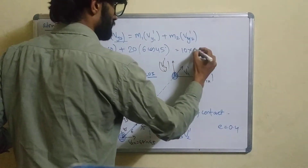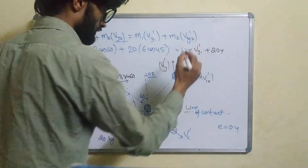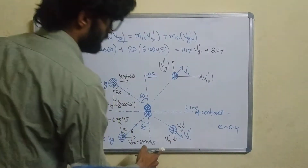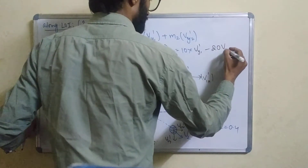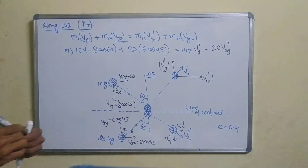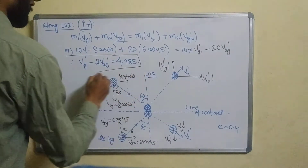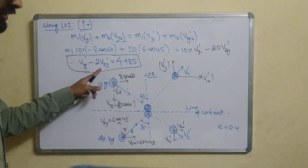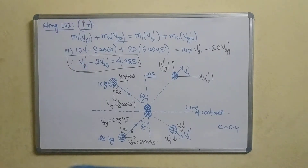So we have 10·v1y' + 20·v2y' from the y-component equation. The negative terms give us minus 20·v2y'. We can find the values of v1y' and v2y'. The result gives: v1y' minus 2·v2y' = 4.5.